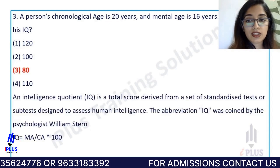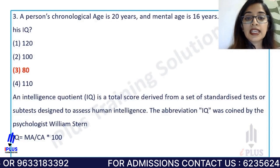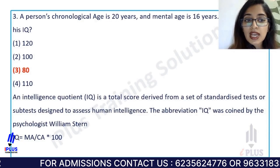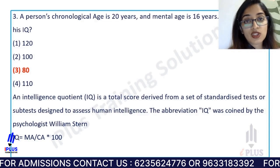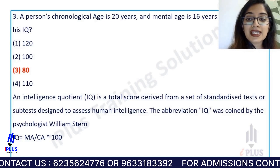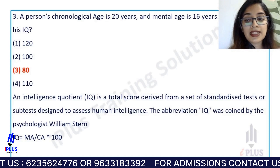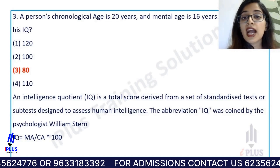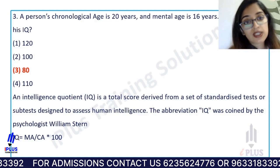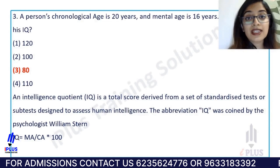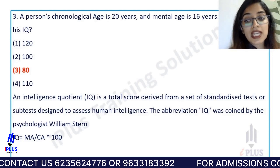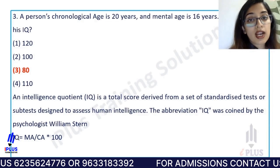When we have more information about a person, we can calculate IQ. IQ is a total score derived from a standardized test. The abbreviation IQ was coined by the famous psychologist William Stern. The formula is: IQ = mental age divided by chronological age, multiplied by 100 (MA ÷ CA × 100).